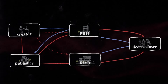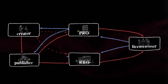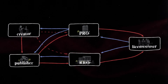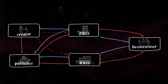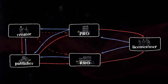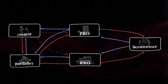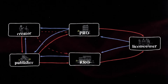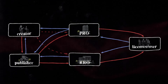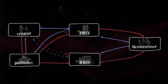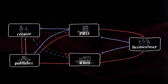The RRO typically pays the entire mechanical royalty to the publisher, who then pays the music creator their share as outlined in the publishing agreement. If the music creator is self-published, they will receive the mechanical royalty directly from the RRO.